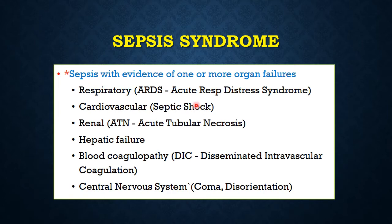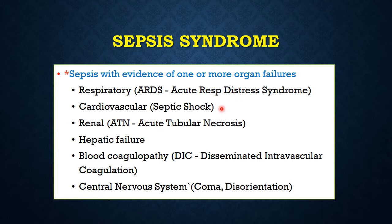Sepsis syndrome is sepsis with evidence of one or more organ failures. Not only is sepsis present, but it is also accompanied by at least one organ system failure: respiratory failure such as ARDS, cardiovascular failure as in septic shock, renal failure as in acute tubular necrosis, hepatic failure, blood coagulopathy as in DIC (disseminated intravascular coagulation), and CNS signs like coma and disorientation.